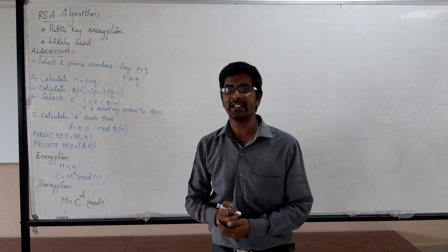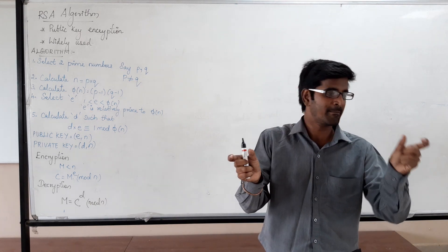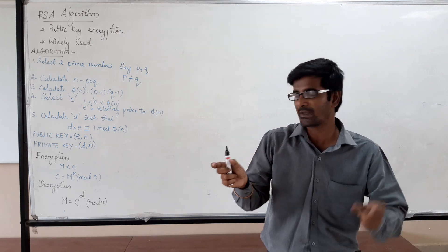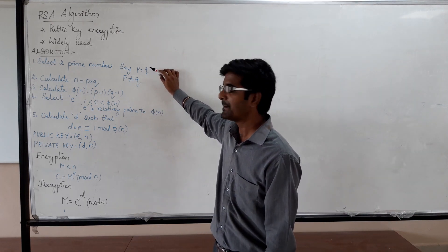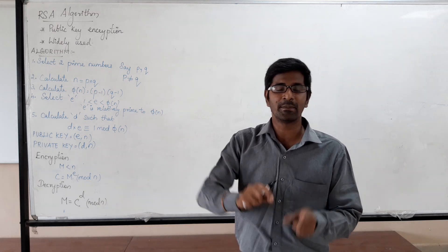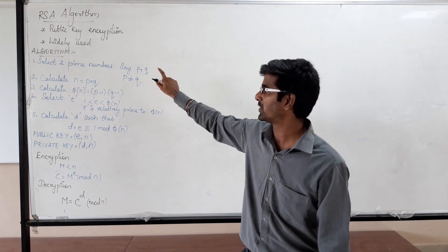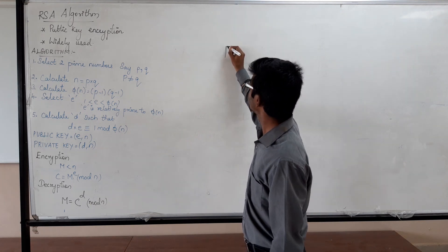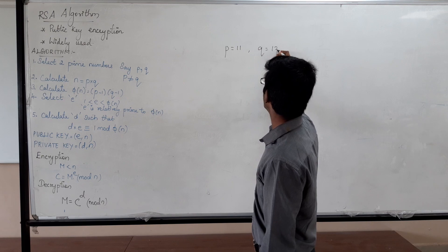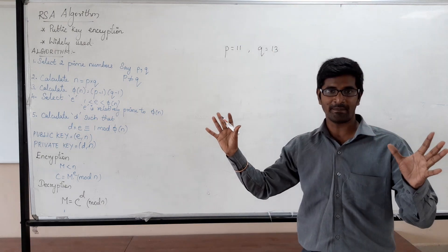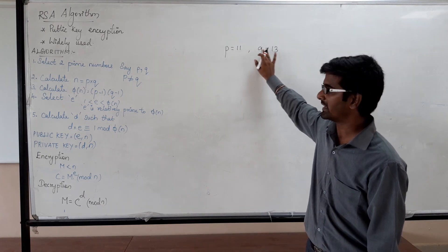Step number 1 in the algorithm is to choose two distinct prime numbers where P and Q are not the same. In this lecture I am not going to solve any example, just illustrate how the algorithm works. So let us say the prime number P is equal to 11 and Q is equal to 13, where P is not equal to Q.